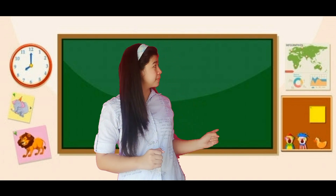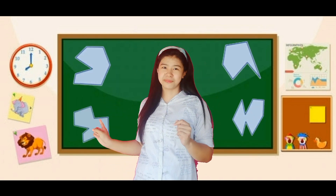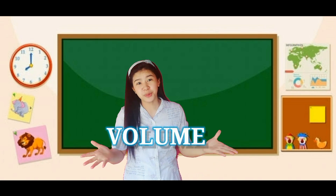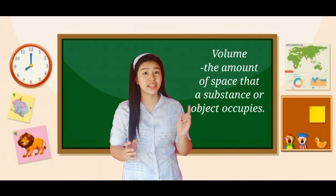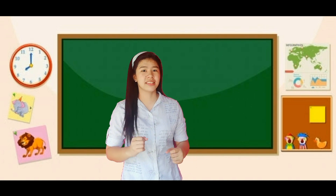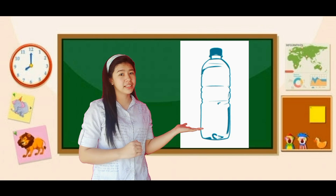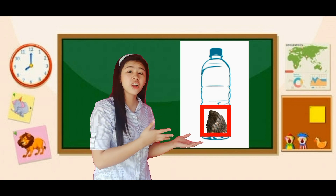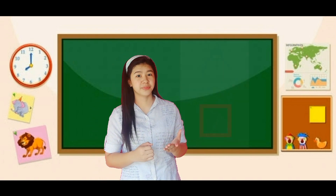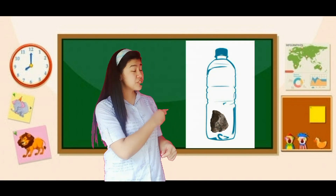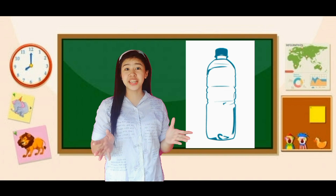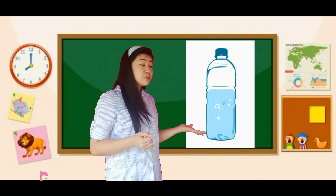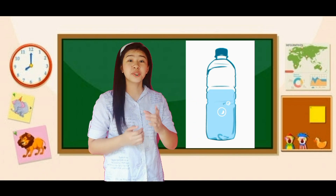Here are some examples. Now let's proceed to the second word: volume. Volume is the amount of space that an object or substance occupies. For example, this is an empty bottle and we're going to put a rock inside it. The amount of space that the rock occupies is its volume. Now let's remove the rock and try other examples — let's put some water inside the empty bottle. Same as the rock, the water consumes space, which pertains to its volume.